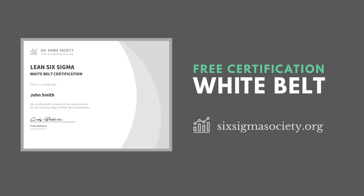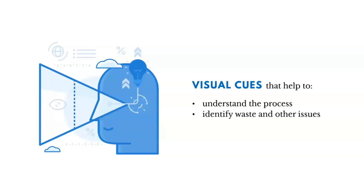Now let's talk about the visual workplace. This includes visual cues that help us understand the process and identify waste and other issues. The question becomes: can we easily see the process working, and can we easily see where waste exists so we can eradicate it? These are visual cues.